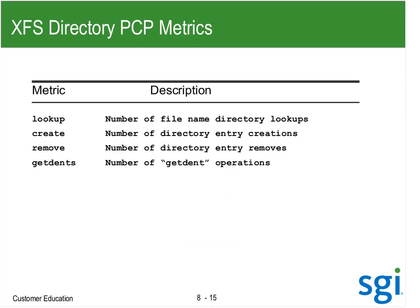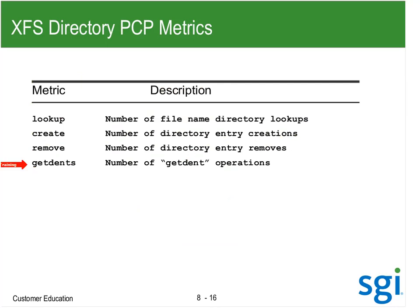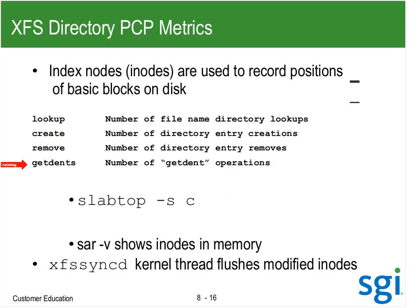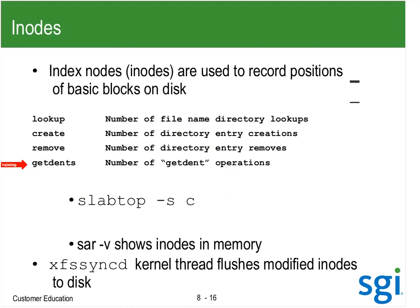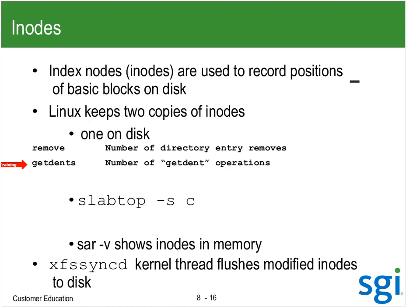For directory information, we were seeing with XFS stats: creates and lookups. We did not see any removes, and we did not see any LSs. get_dents indicates an LS or find operation. Then we have the inode or index node, used to keep track of the position of blocks on the disk.